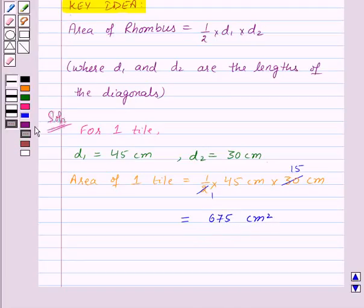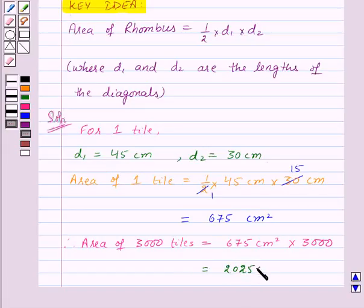Now this is the area of one tile. Therefore, area of 3,000 tiles will be equal to 675 centimeters squared × 3,000, that is equal to 2,025,000 centimeters squared.